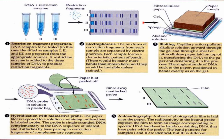Each sample forms a characteristic pattern of bands. Now this gel is used for Southern blotting. Here, capillary action pulls an alkaline solution upward through the gel and through a sheet of nitrocellulose paper laid on top of it, transferring the DNA to the paper and denaturing it in the process. The single-stranded DNA sticks to the paper, positioned in the bands exactly as on the gel.